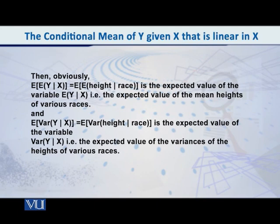So I have given you an example of how you can understand that E(Y|X) is itself a variable, and variance of Y given X too is a variable. If this is clear to you, then please note that we can find the expected value of E(Y|X), and the expected value of the variance of Y given X. From the example we just discussed, the expected value of the expected value of height given race is the expected value of the variable E(Y|X), the expected value of the mean heights of the people of various races. Similarly, the expected value of the variance of height given race is the expected value of the variable Var(Y|X), that is the expected value of the variances of the heights of the people of various races. So in this way, this whole story, I'm sure you will agree, is really quite interesting.